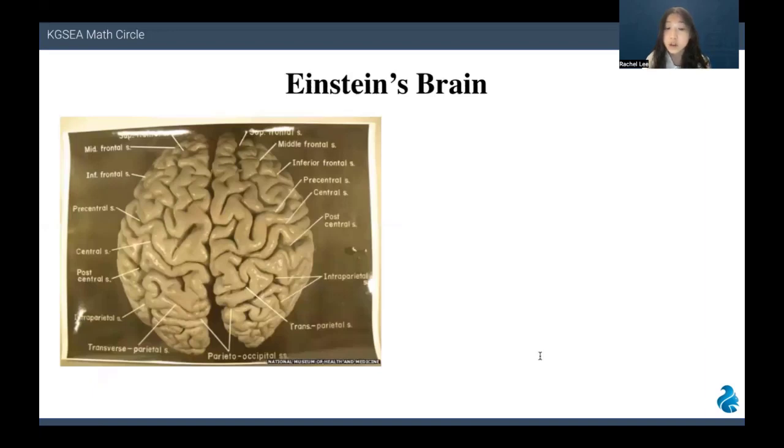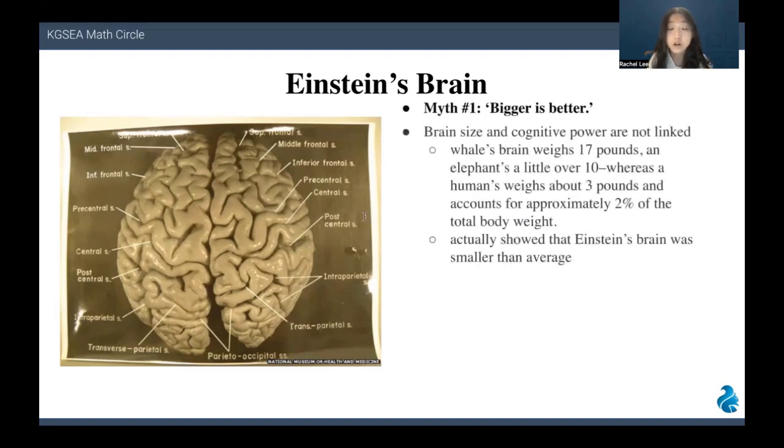There have been lots of myths regarding Einstein's brain. It's only natural to assume that given Einstein's high-power cognition, his brain was simply bigger, right? That's the first myth: bigger is better. While this seems like a logical enough assumption, the fact is that brain size and cognitive power are not linked. For example, a sperm whale's brain is over 50 times bigger than a human's. However, we cannot see that a whale's cognitive power is stronger than a human's. Weight also has little correlation with intelligence. In fact, a sperm whale's brain weighs 17 pounds and an elephant's little over 10, whereas a human weighs about 3 pounds and accounts for approximately 2% of the total body weight. So bigger isn't necessarily better.